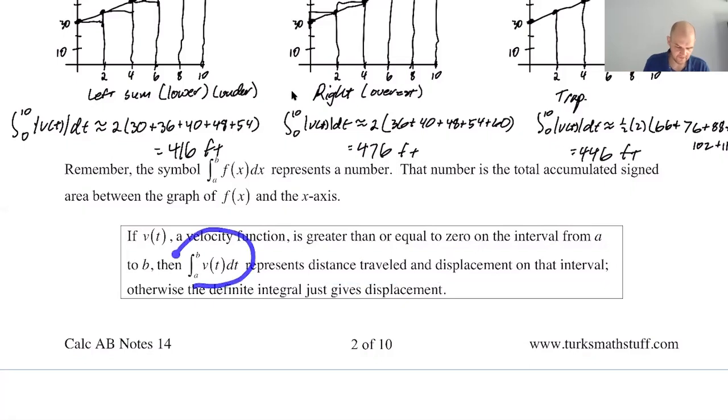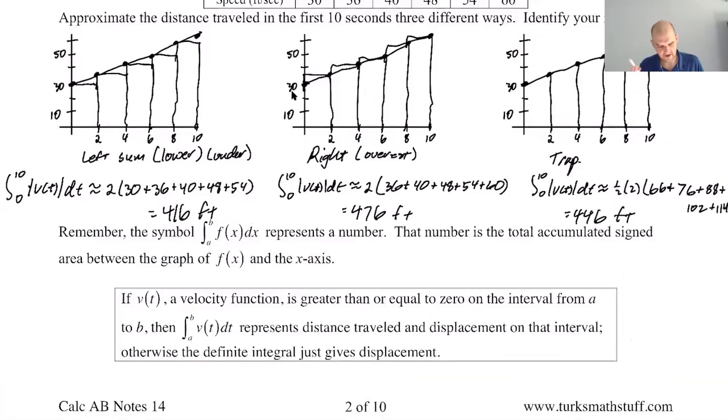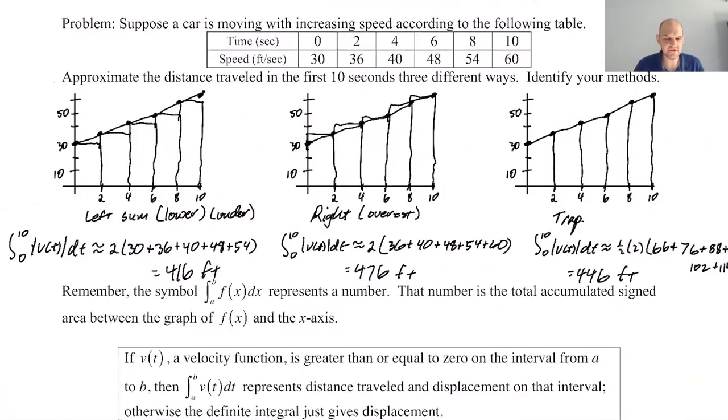So the integral of v of t dt is displacement. Coincidentally, if v of t is greater than or equal to zero all the time, it's also distance traveled. If it's not greater than or equal to zero, you're just getting displacement. You want distance traveled, you should always be doing the absolute value of v of t because you'd be doing speed. You want to integrate speed. All right, so that's like a bunch of examples and I think the rectangles went better this time and I will see you in the next video.